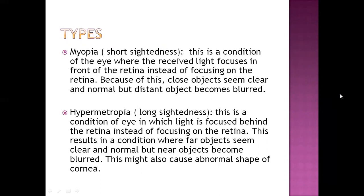Myopia, also called short-sightedness, is a condition in which light received from an outside source focuses in front of the retina instead of on the retina. Because of this, only near objects seem clear and distant objects do not seem clear.